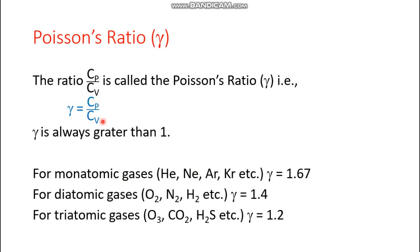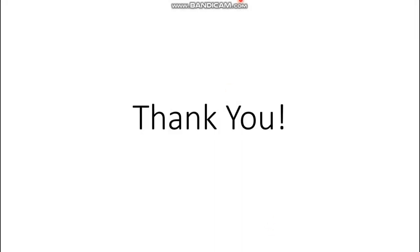Since Cp > Cv, the ratio γ is always greater than 1. For monatomic gases like helium, neon, argon, and krypton, γ = 1.67 (5/3). For diatomic gases like O₂, N₂, H₂, and CO, γ = 1.4 (7/5). For triatomic gases like ozone, CO₂, and H₂S, γ = 1.21 (approximately 1.2). That's all for today's lecture — thank you and have a nice day.